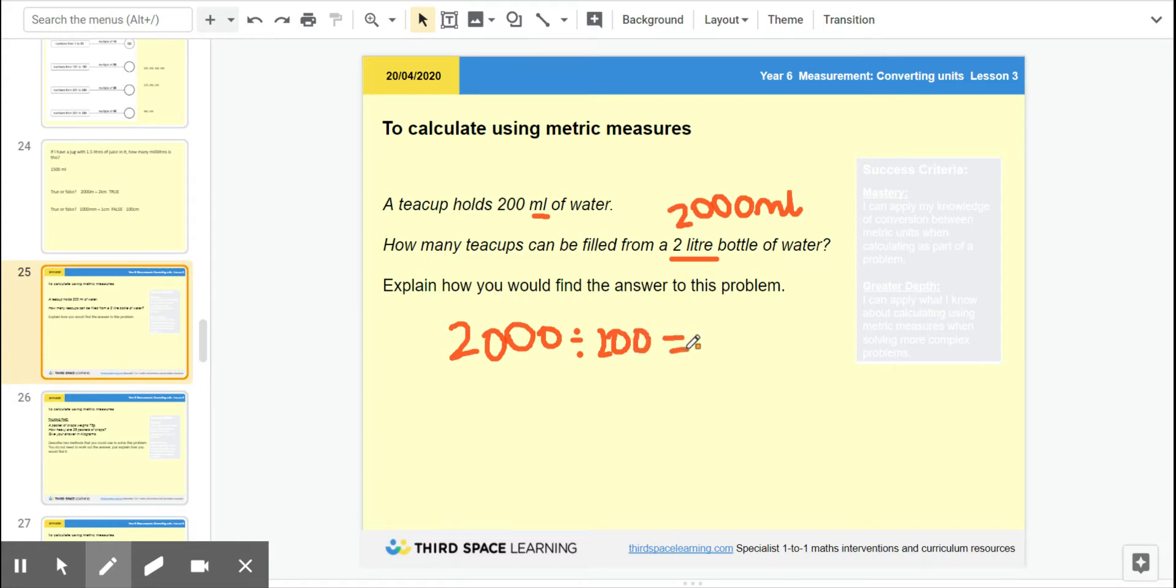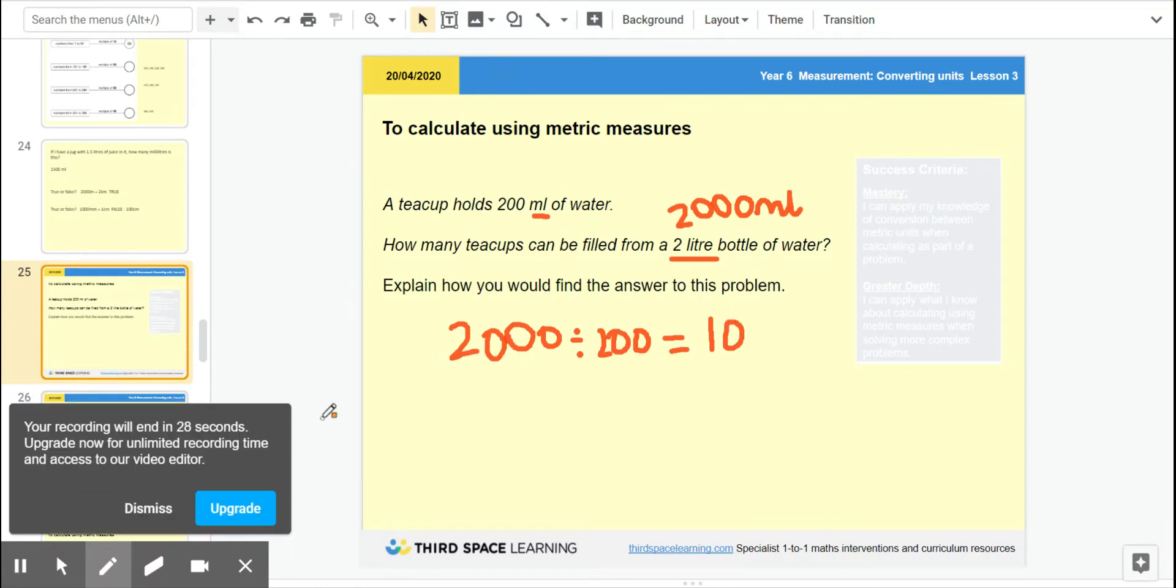If we want to find an easier way, we can do 20 divided by 2. Take these two zeros away, divided by 100 to get that. 20 divided by 2 is 10, so the same for 2000 divided by 200, we can get 10 teacups into a 2-liter bottle of water. Okay, I'm going to pause that here now and we'll go on to part two, so look out for the next slide.